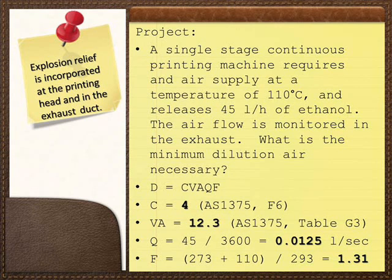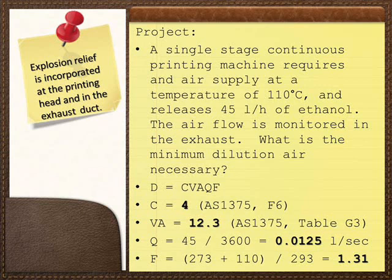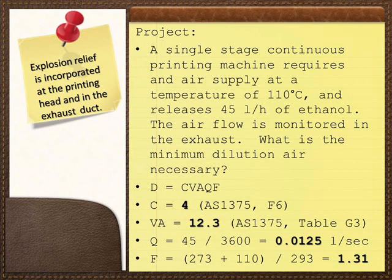What is the minimum dilution air necessary for this appliance? The equation is D equals C times V times A times Q times F. C equals 4, as per AS1375 Appendix F clause 6. VA is looked up in Table G, which gives 12.3. Q is 45 litres per hour and needs to be converted to litres per second. F, because the air temperature is 110 degrees C, needs to be calculated and equals 1.31.